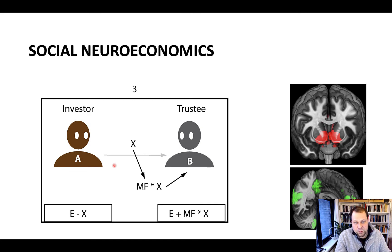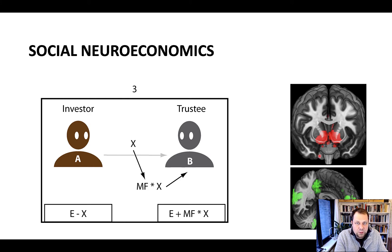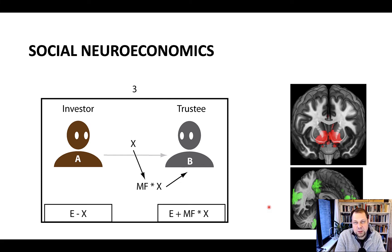To give you a preview, there are two consistent findings in this field. One is that social interactions can be rewarding — specific aspects of these interactions are processed in the reward system. The other is that we need to infer our interaction partners' intentions, and there's a network — the social cognition network — consistently involved in this. We'll talk about both of these networks in the following videos.